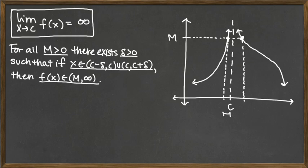The two x-values on the x-axis give us two x-distances. The one on the left is the smaller x-distance, and that distance is going to be the delta we choose — because the other one was bigger, and we always want to go smaller so that we stay in that vertical strip. That vertical strip then forces us into the interval above M. That's how we take care of this when we switch L to infinity.